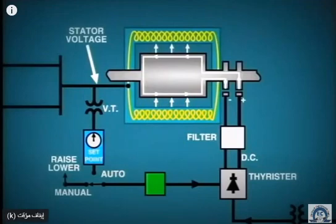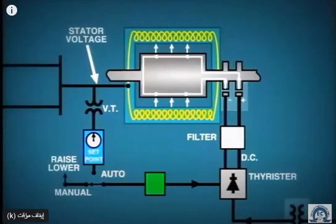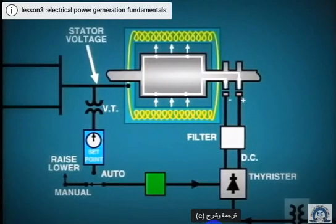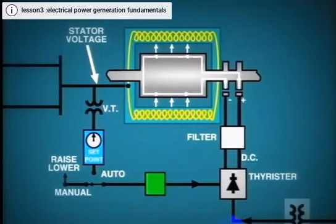The DC current from the rectifier is supplied to the rotor winding through collector rings on the shaft. The incoming AC to the rectifier is supplied from a dedicated transformer. The primary side of this transformer is fed from an auxiliary bus, or in some cases, the generator bus itself.